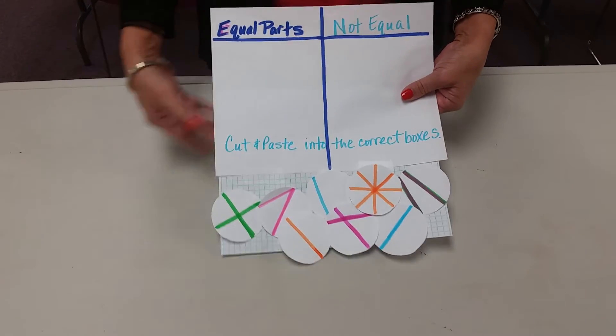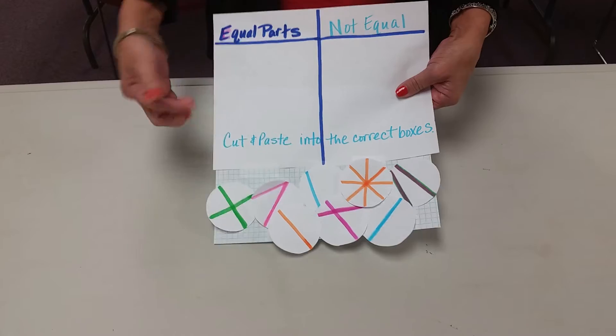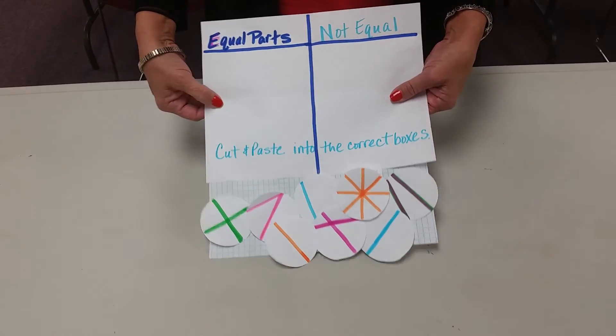Your paper would have these little circles on the bottom, and the instructions are cut and paste into the correct boxes.